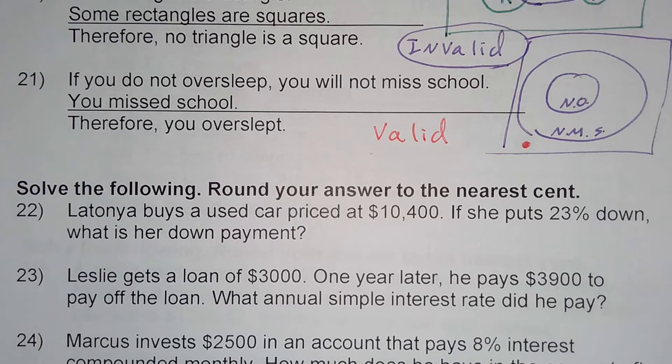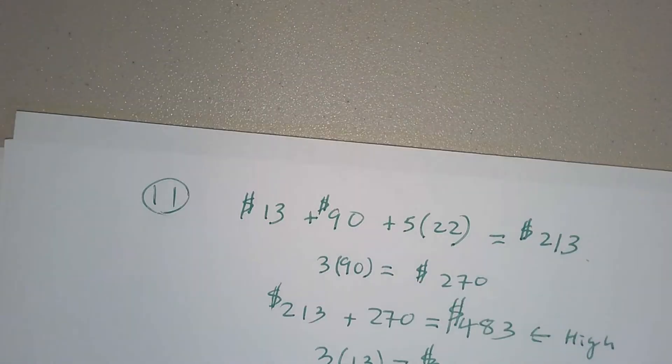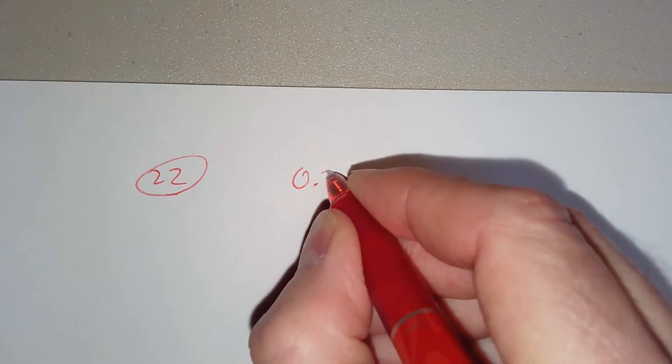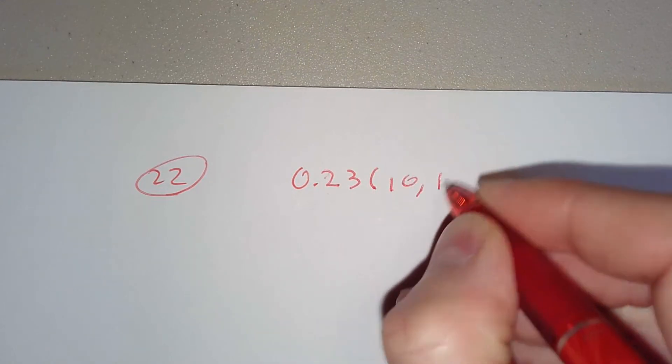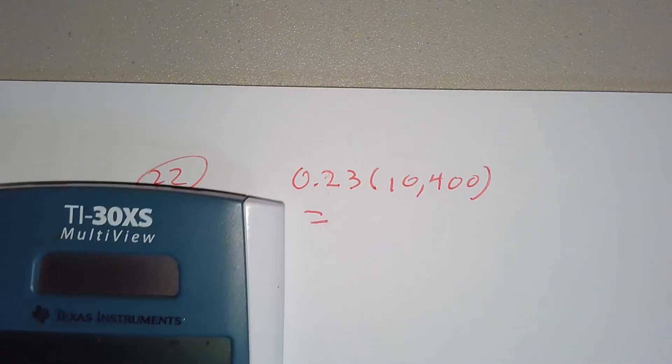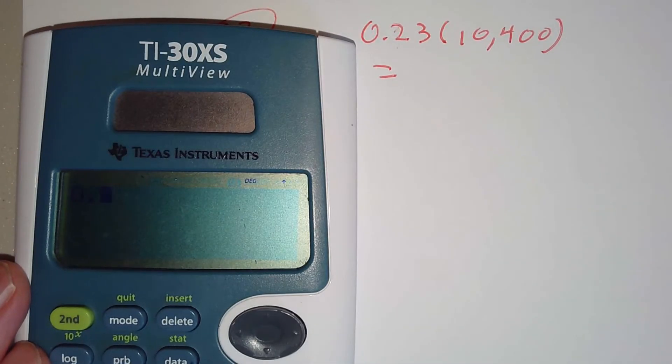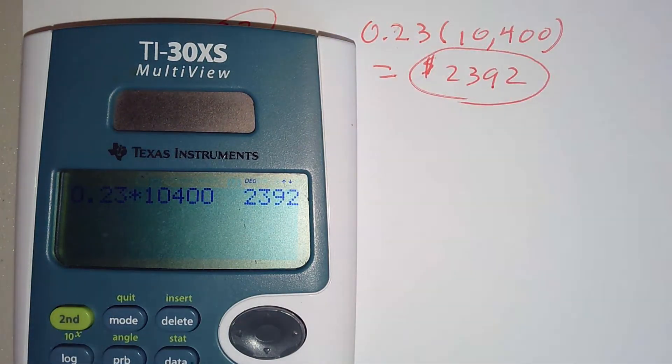Let's try number 22. Latoya buys a used car priced at $10,400. If she puts 23% down, what is her down payment? All right, so she's putting 23% down, that's 0.23, and it's going to be times the amount, which is $10,400. So we're just going to punch that on our calculator. And that would give us $2,392, and that would be her down payment.